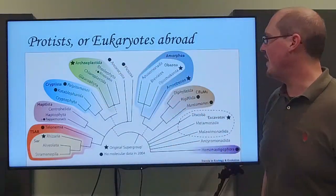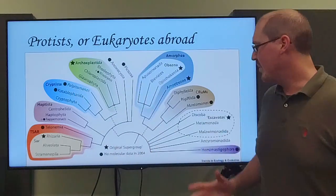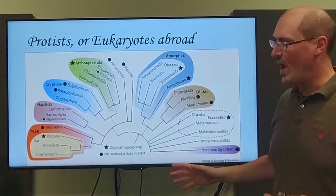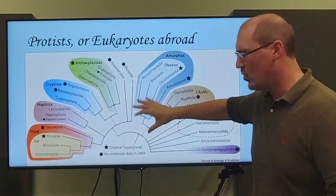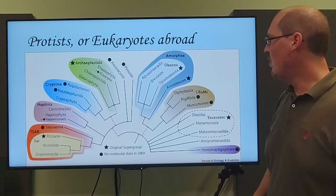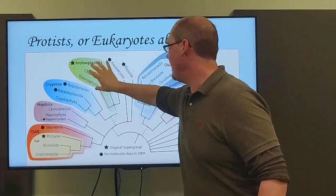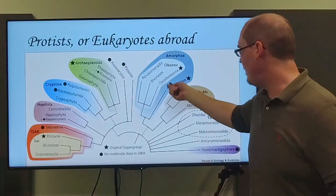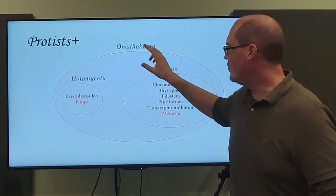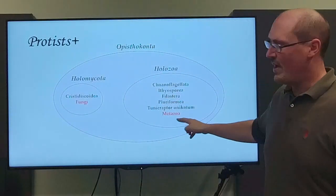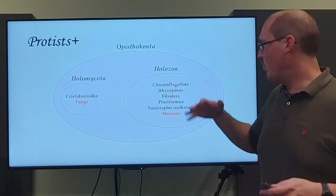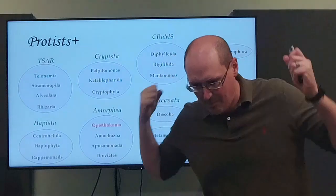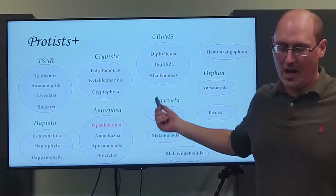We're on to protists, or as I like to say, eukaryotes abroad. Because despite being somewhat of a grab bag, it turns out they have very high level, like supergroup, kingdom level diversity. We've already seen Archaeplastida as one of the eukaryotes and Opisthokonta, so we'll cover everything else. One note of Opisthokonta, it includes fungi and animals or metazoa, and then some very closely related groups that we can just show here and then move on, because that's all the time we have.